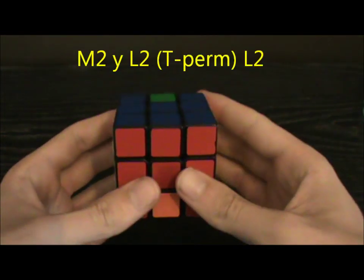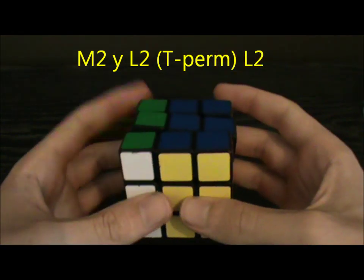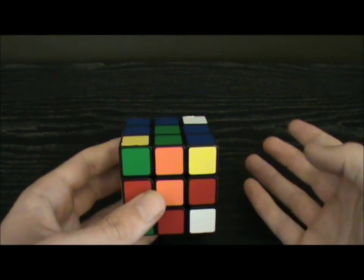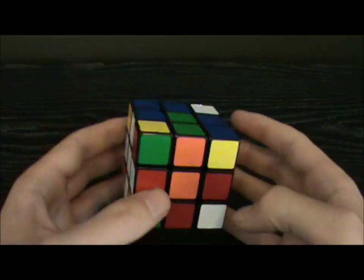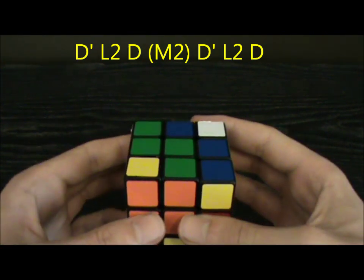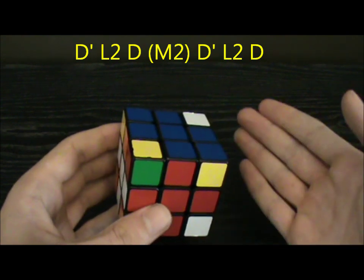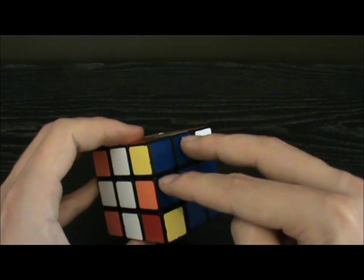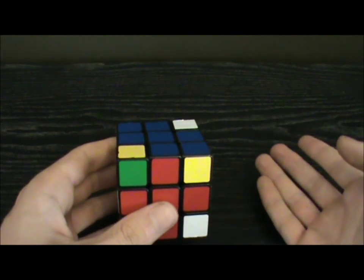Then once you've finished with the edges, you'll end up with something looking like this, and what you can then do is M2 Y L2 T' L2 L2. If you have parity and you solve the edges first, what you can do is after you've solved all the edges, you can do D' L2 D M2 D' L2 D. What that does is it fixes the M slice and it also swaps these two edges. So now as long as you solve an odd number of corners with classic Pochmann, parity is fixed.